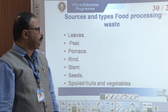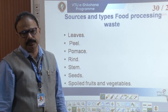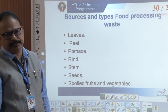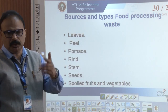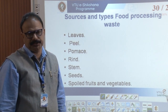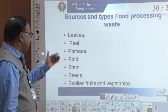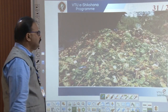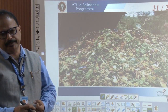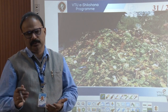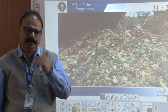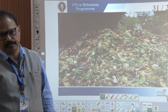Sources of food processing waste include peels, stems, seeds, spoiled vegetables, and spoiled foods. Food processing factories and companies throw this type of waste including mutton offal and other food processing byproducts.